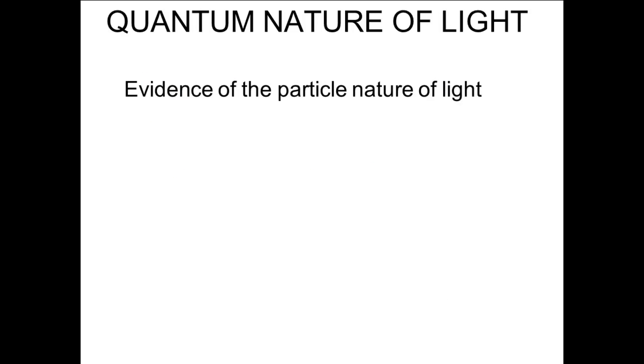In the late 1800s and early 1900s, evidence developed that led scientists to conclude that light had a particle nature as well as a wave nature. This evidence was two problems in physics that the wave nature of light could not explain: black body radiation and the photoelectric effect.